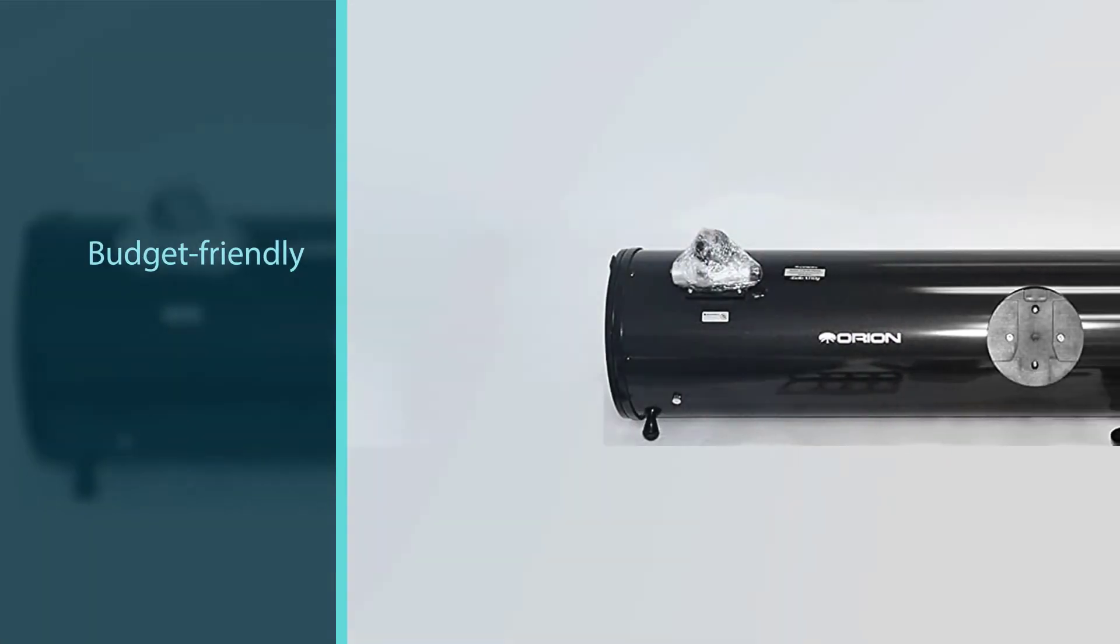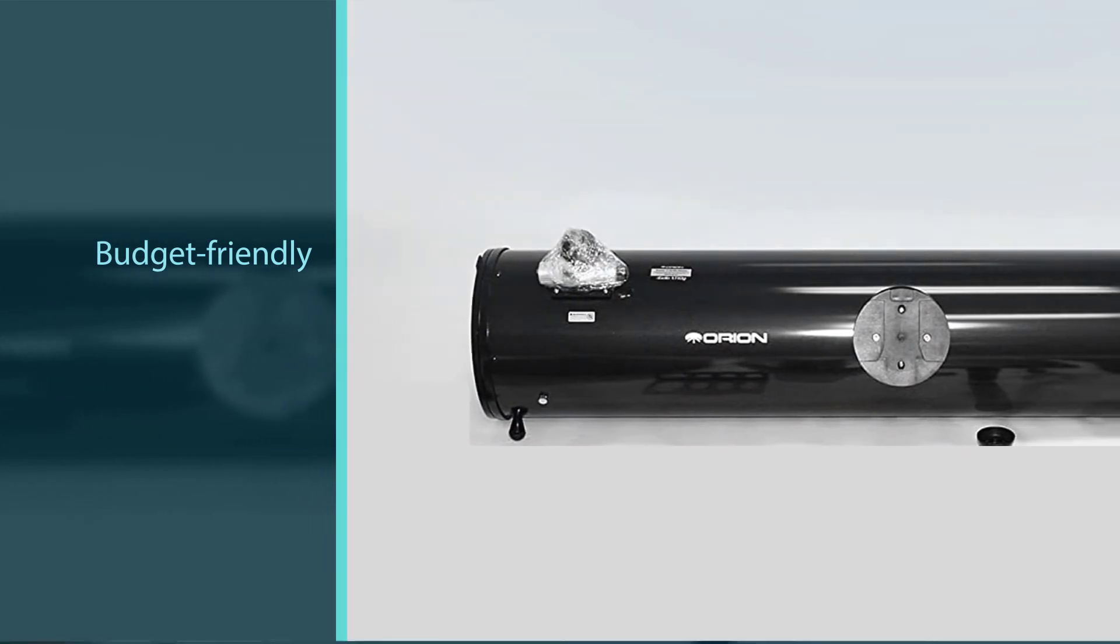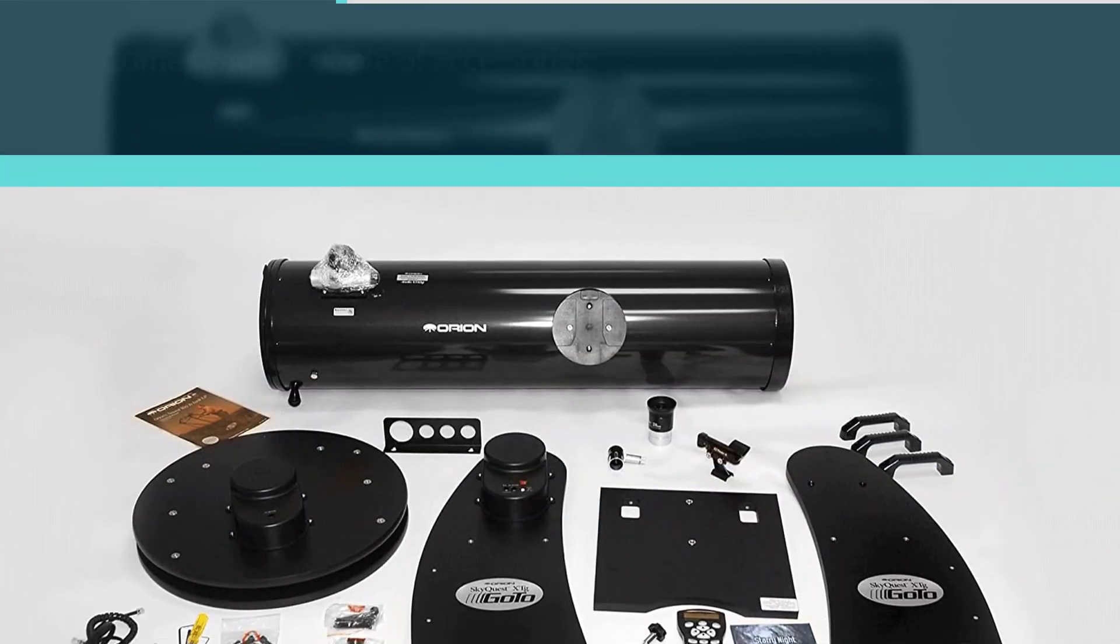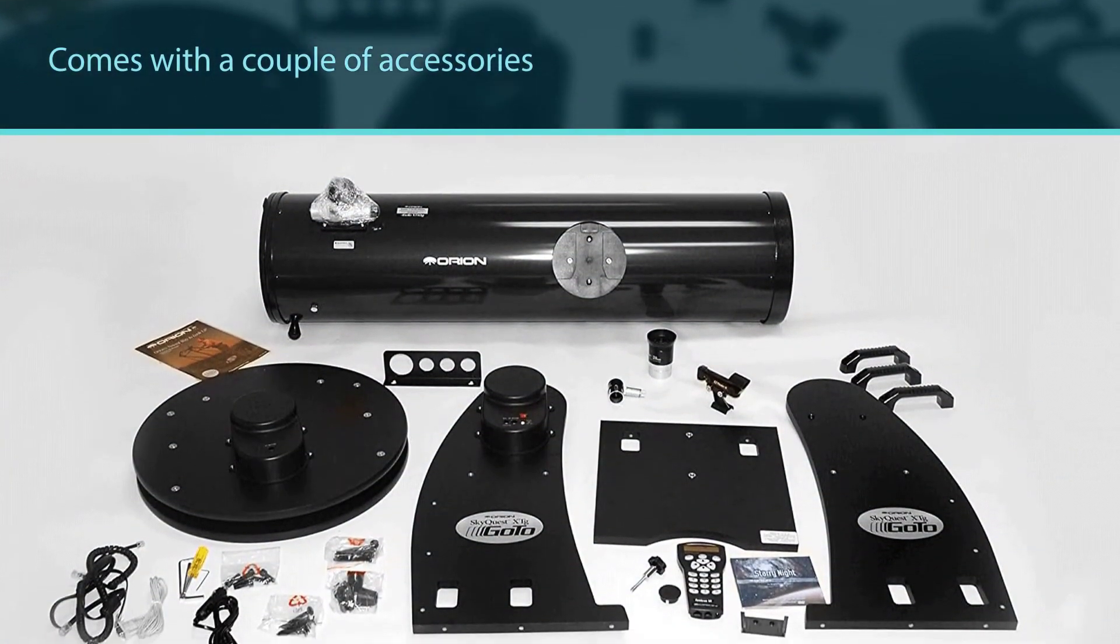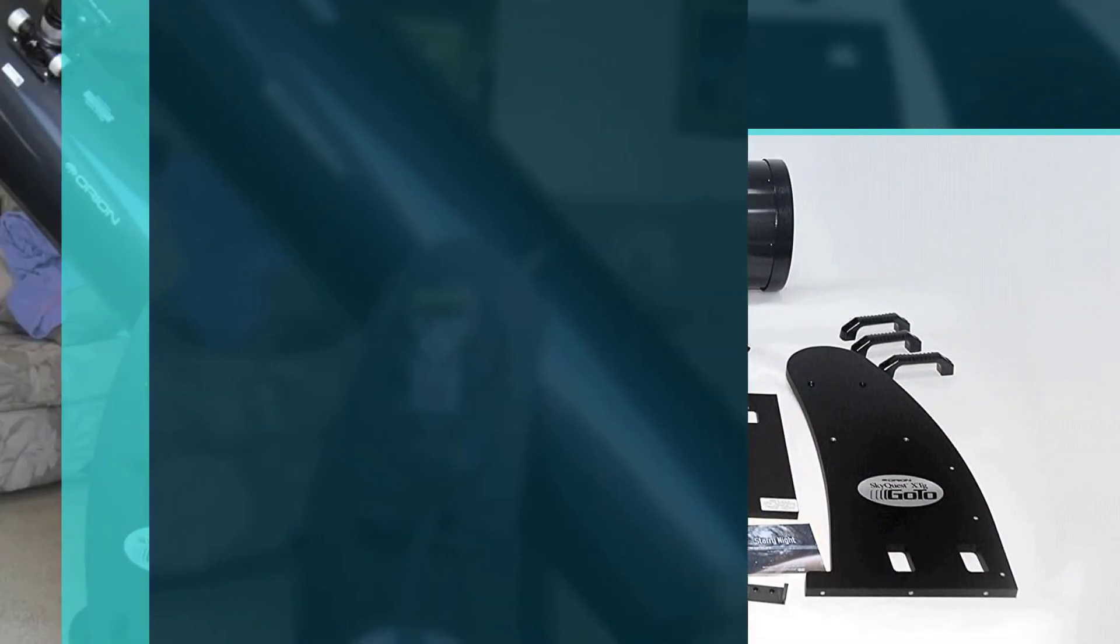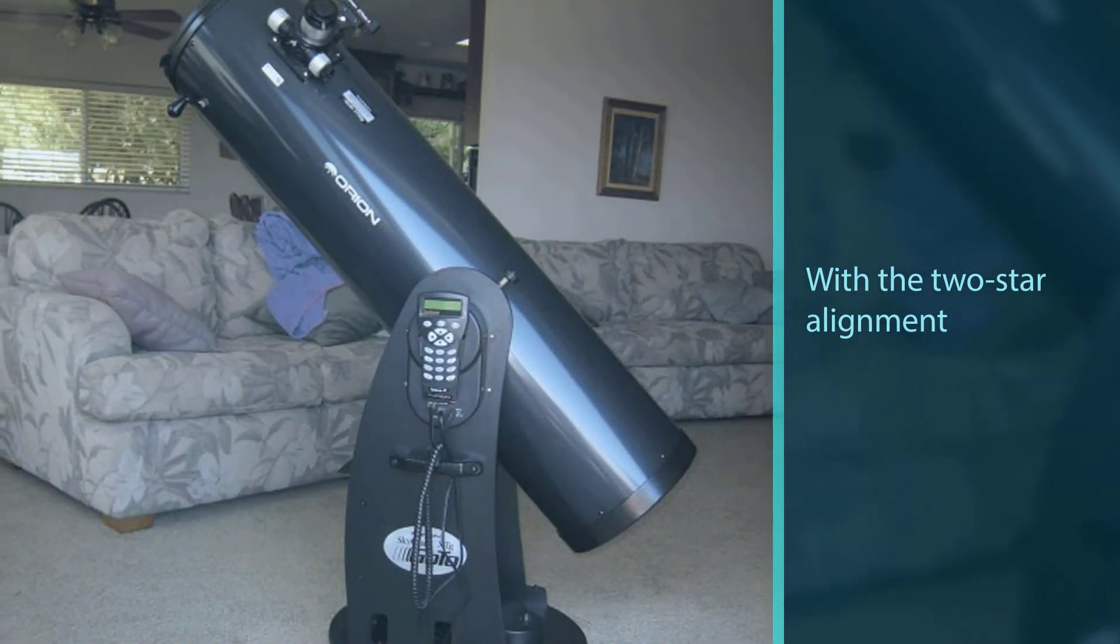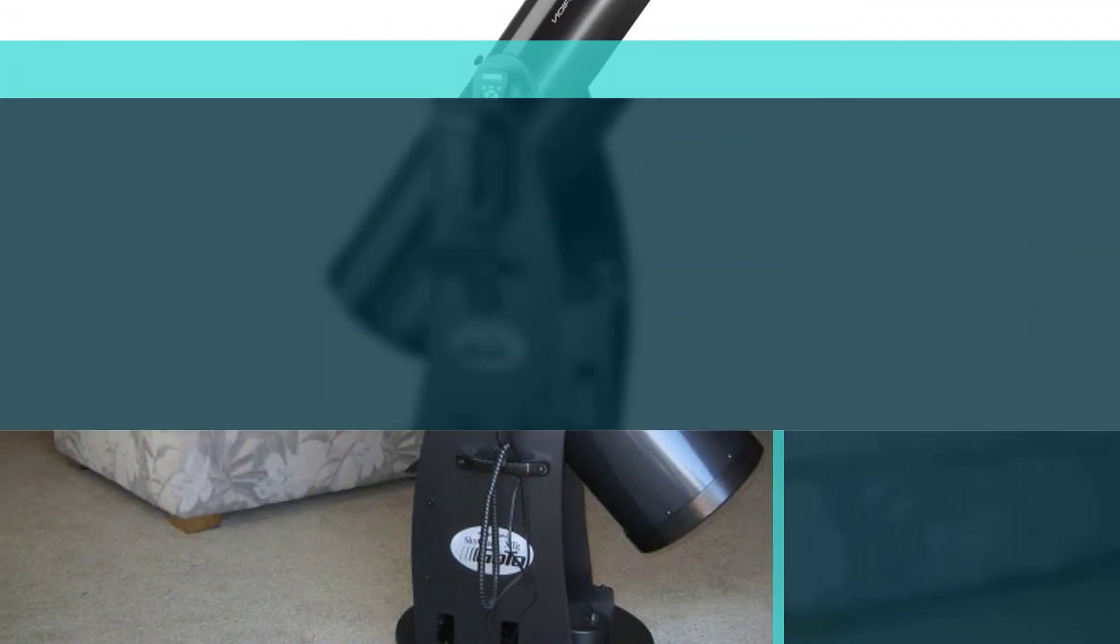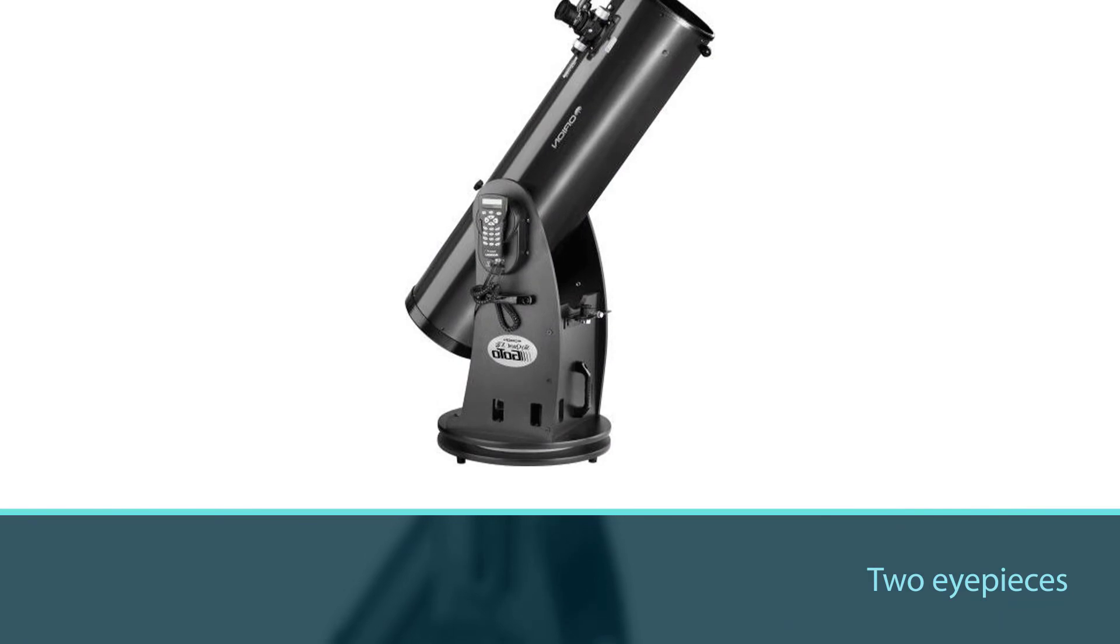The Orion 10135 SkyQuest model is a great reflector telescope in the mid-range budget. This fully motorized GoTo Dobsonian reflector telescope comes with a couple of accessories: an EZ Finder tube helping you with the two-star alignment, and two eyepieces. If you are looking for a cheaper Dobsonian telescope, you can check the Orion 10019 SkyQuest XT10i telescope.